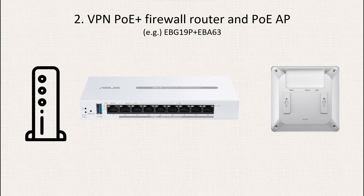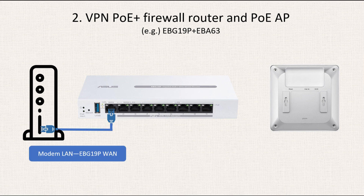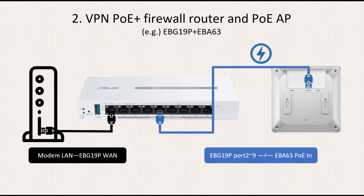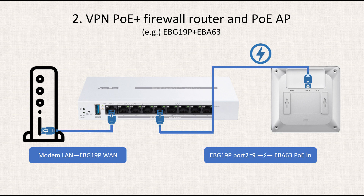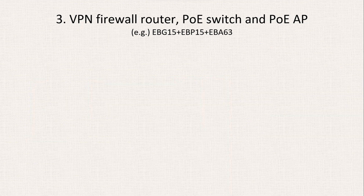Number two: the configuration of VPN PoE+ Firewall Router and PoE AP, taking EBG19P and EBA63 as examples. First, establish a connection by connecting the LAN port of the modem to the WAN port of EBG19P. Second, choose among PoE+ ports 2 to 9 of EBG19P and connect with the PoE input port of EBA63 to establish the connection. The setup will be completed.